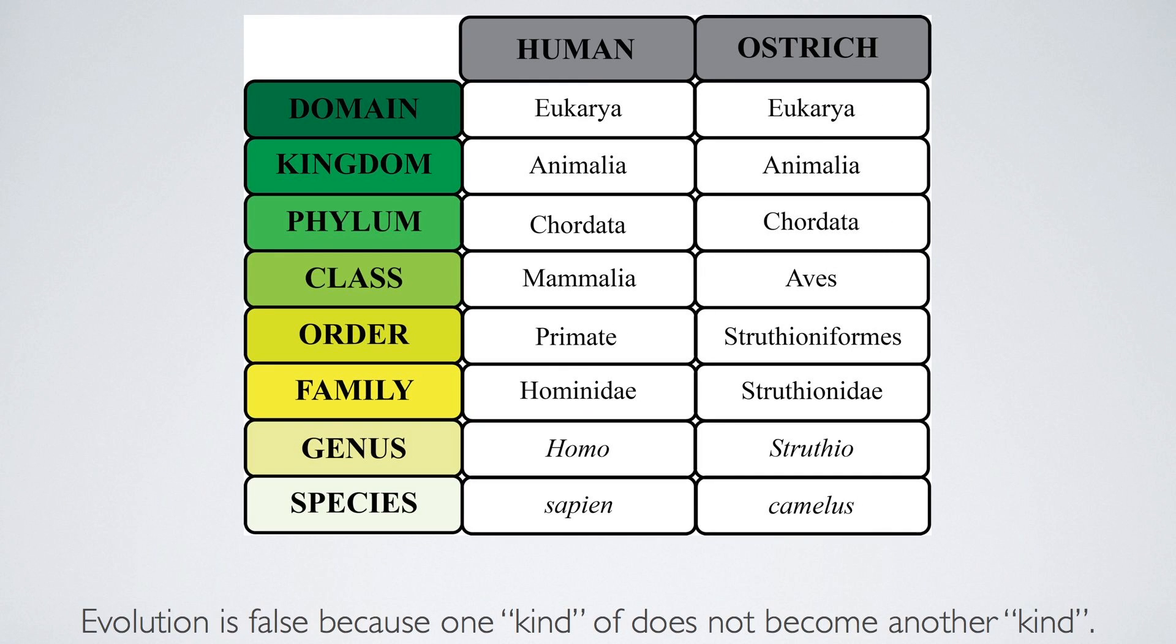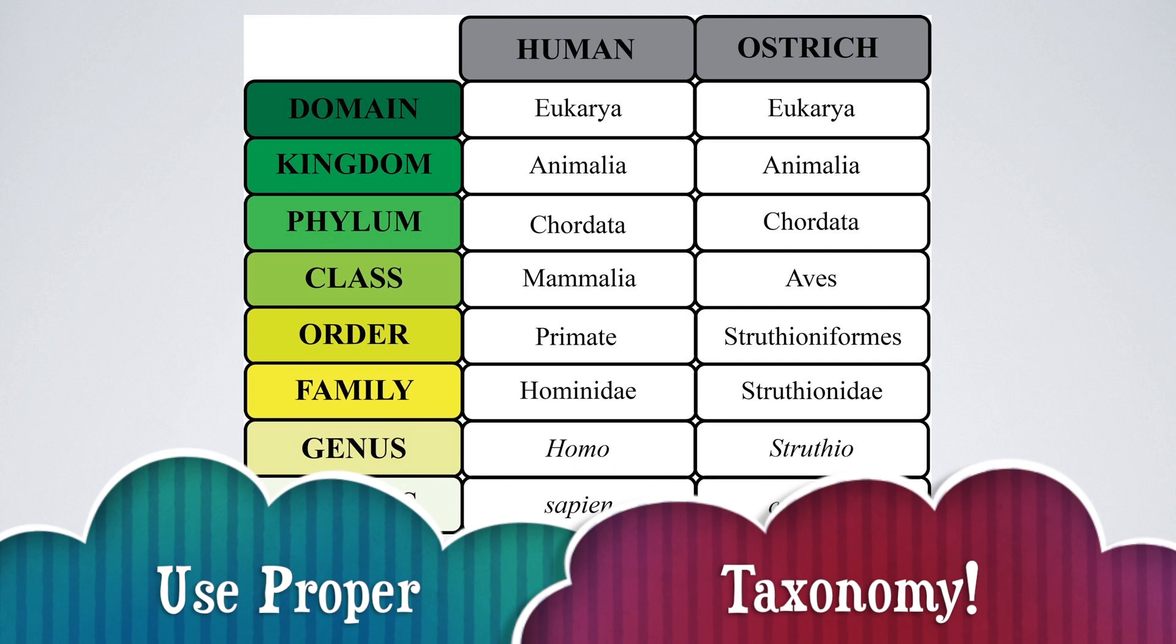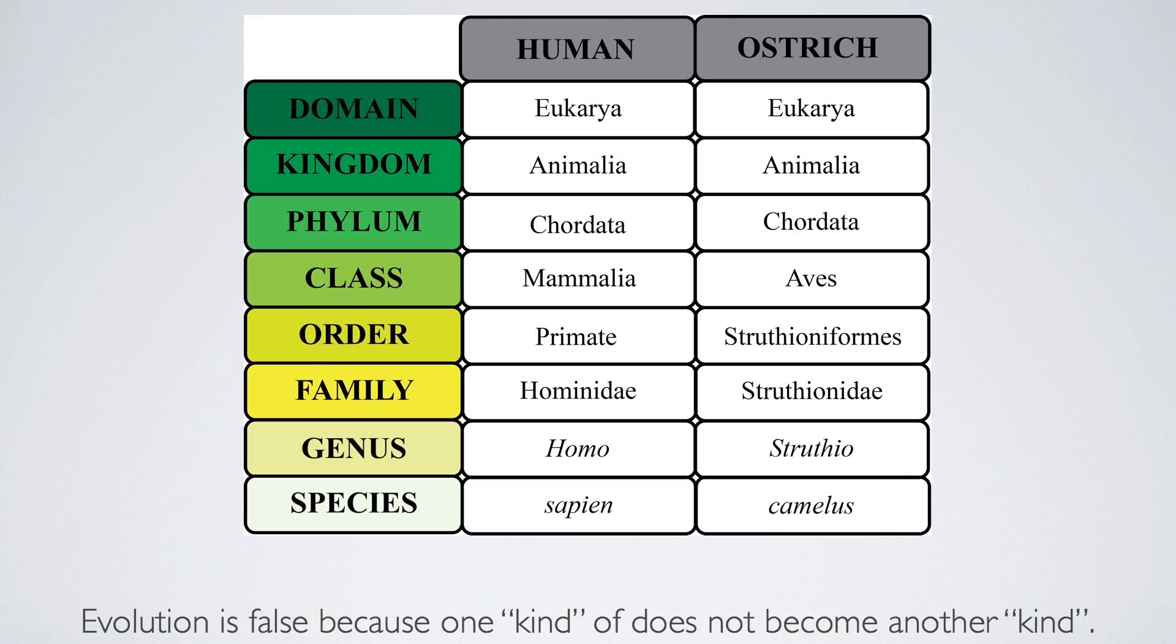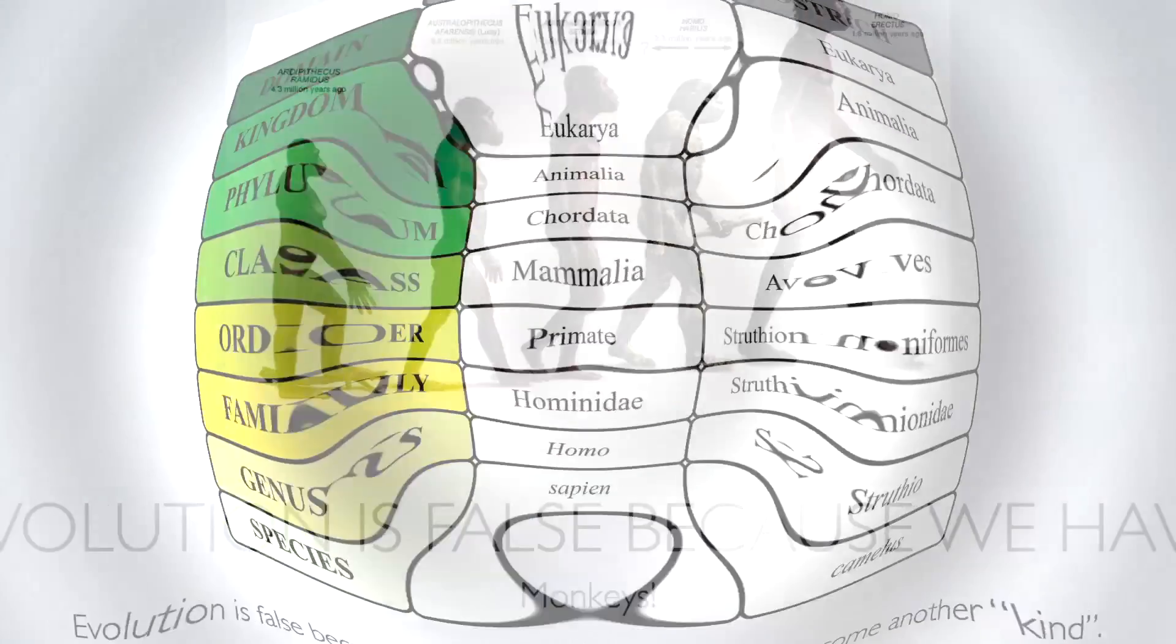In science, we do not classify by kind. We classify by taxonomy: kingdom, phylum, subphylum, superclass, class, subclass, superorder, order, suborder, superfamily, family, subfamily, genus, subgenus, species, and subspecies.